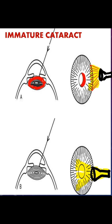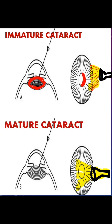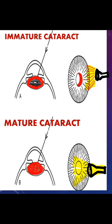However, in case of a mature cataract, all the lens fibers are actually opacified and you don't have any clear lens fibers to act as a clear space between the object and the screen, and therefore when you...